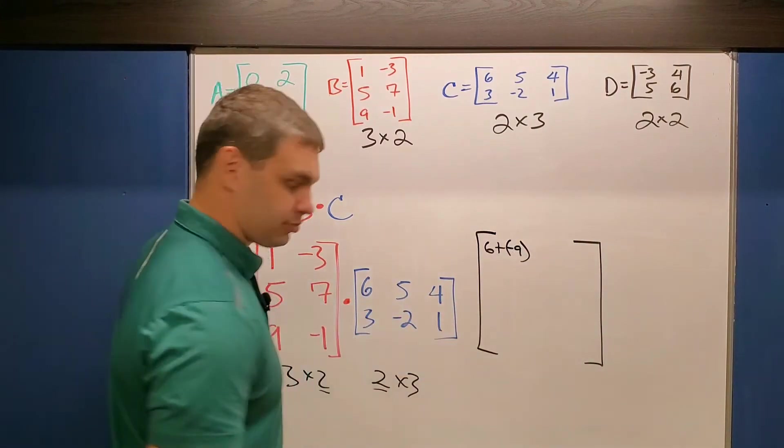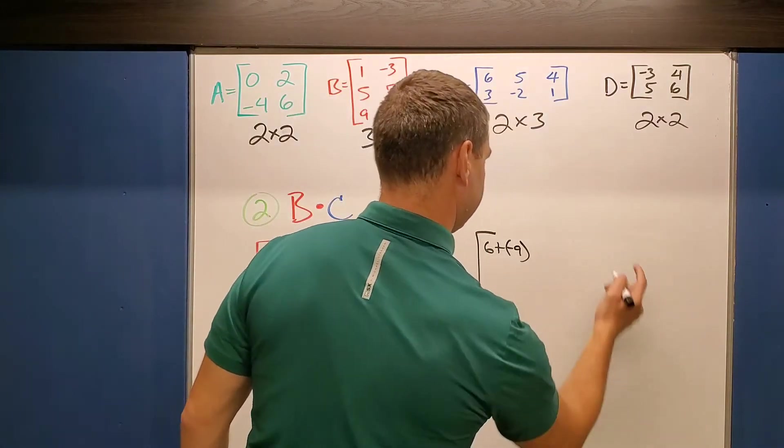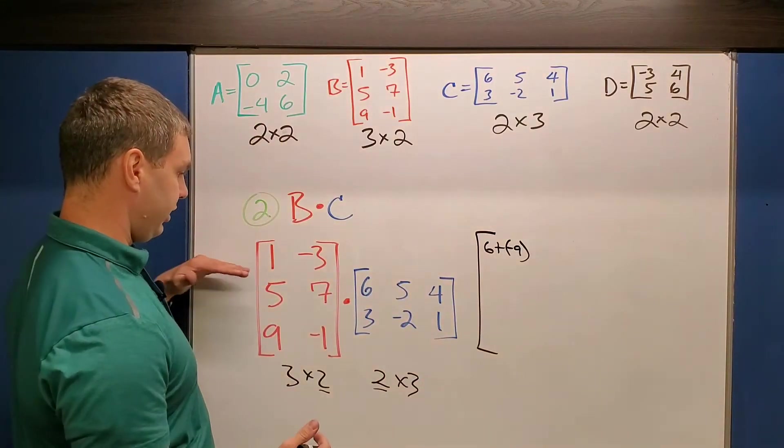For the next one, I'm going to run out of space. Let's try it. We'll fill in the other side here when we're done. For the next one, we're going to do our first row times our second column in the second one.